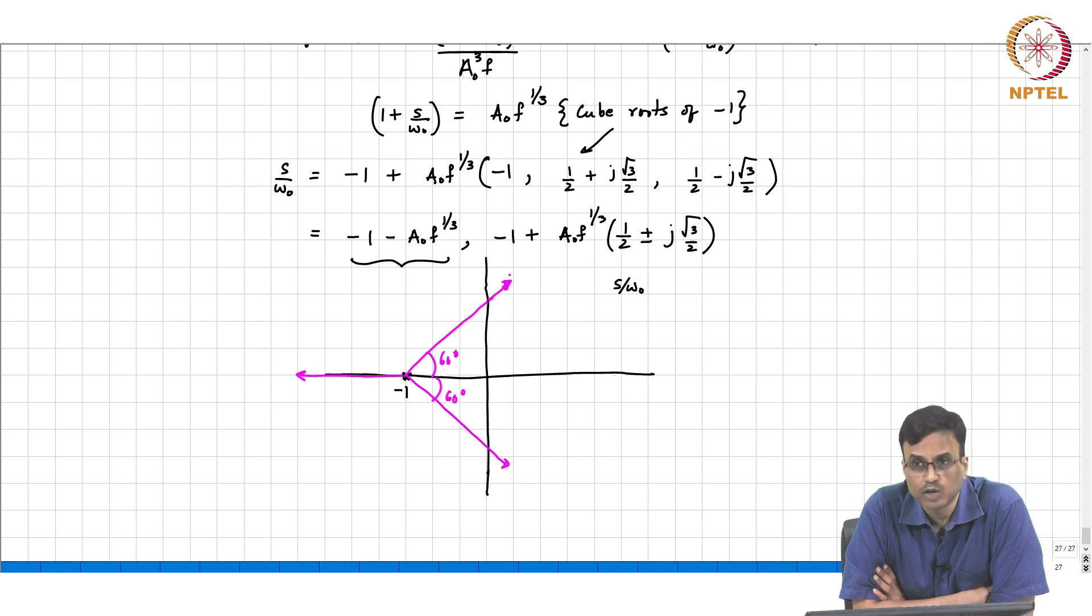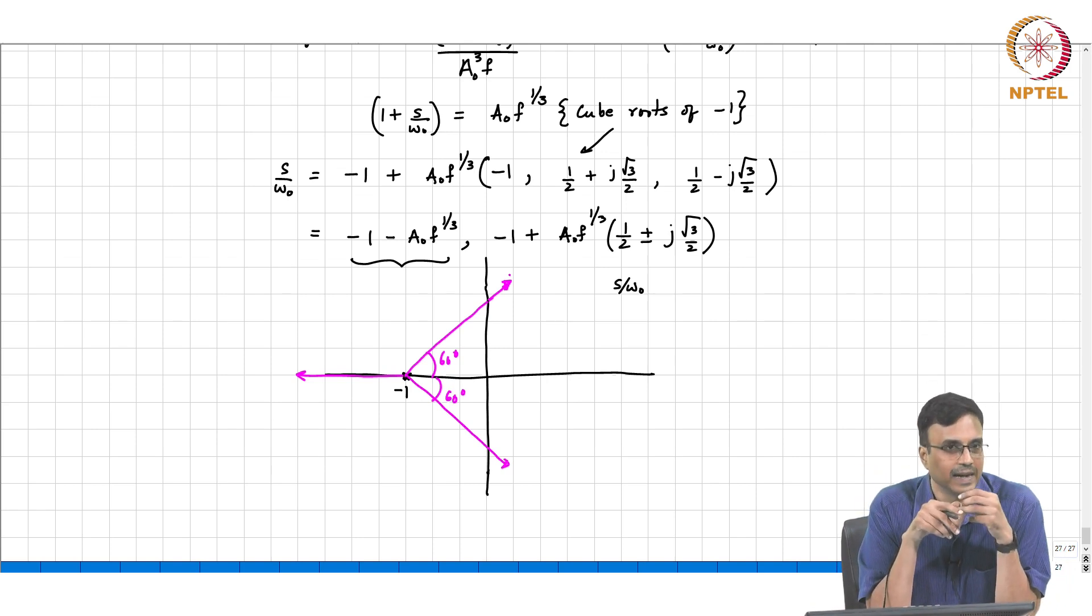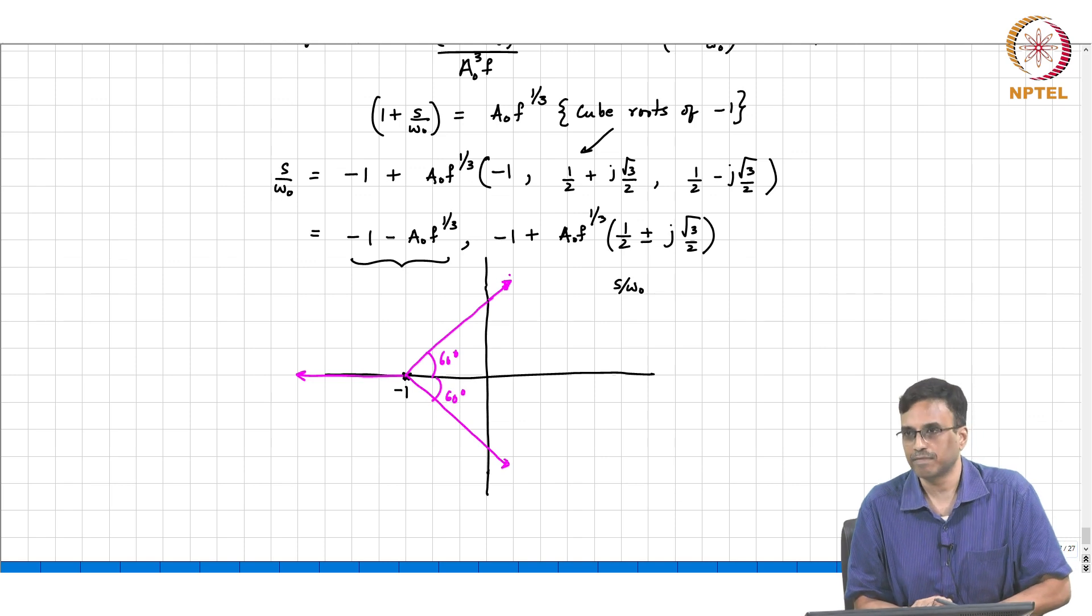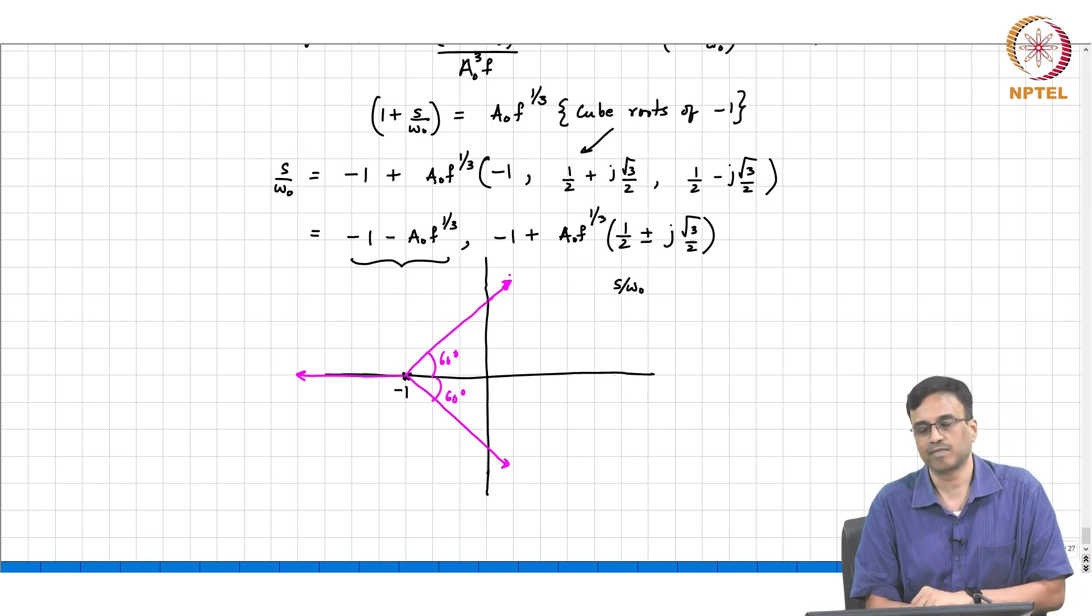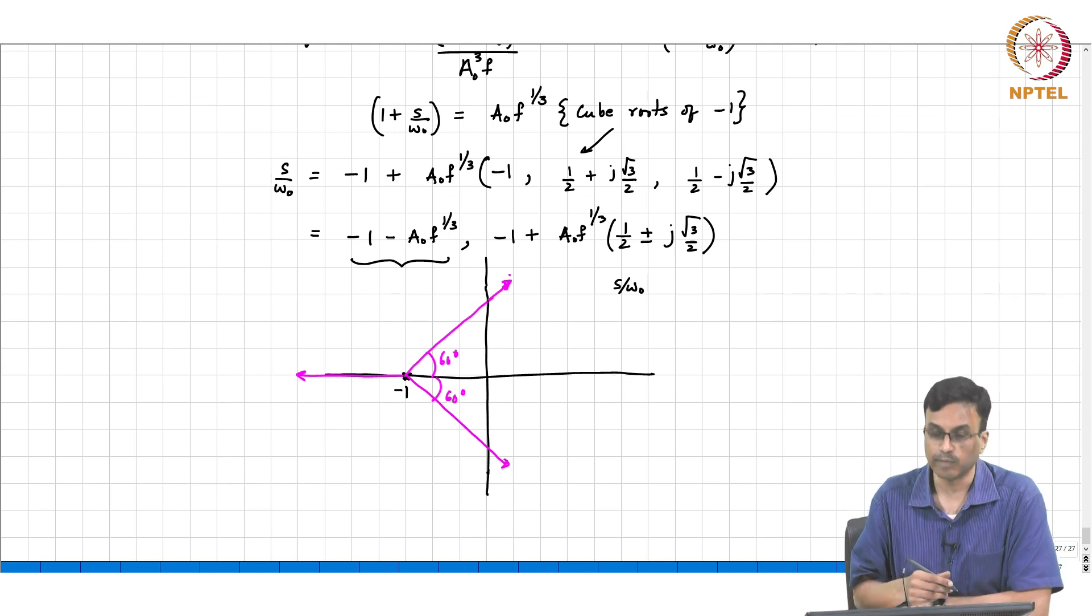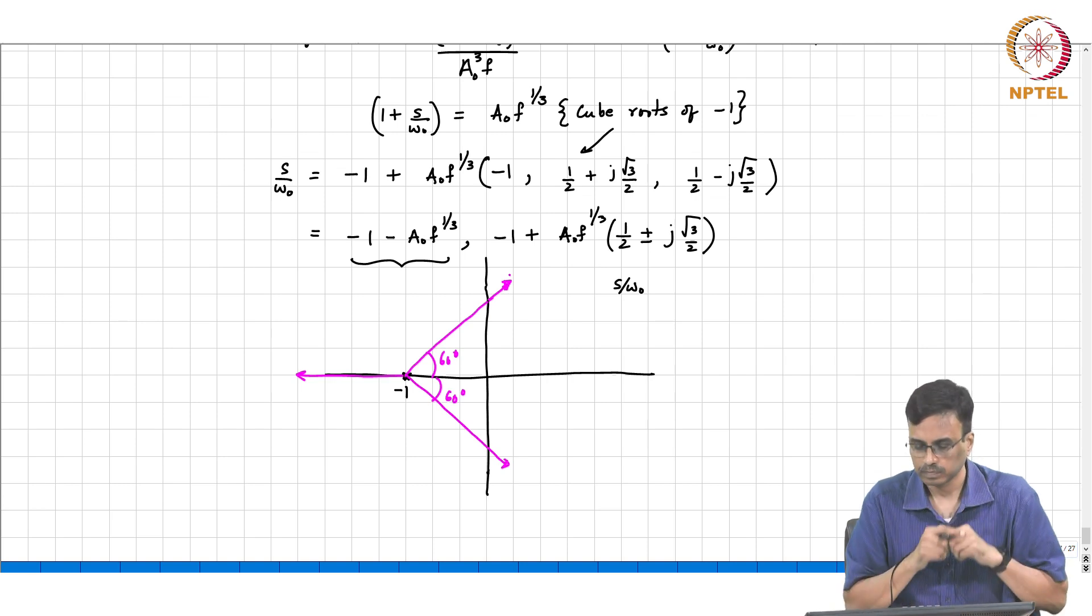What is the thing that you notice from this picture? As you keep increasing a naught cube f, eventually two poles are going to go into the right half s plane. If the second order system was bad enough where the q was so high that it was unusable, these poles are downright crazy, because they are in the right half s plane. So now the question is, perhaps we are still okay if that a naught f needed, or a naught cube f needed to push the poles into the right half s plane is so large that it does not bother us.